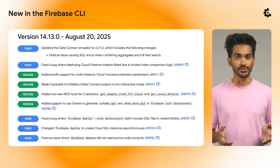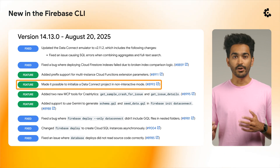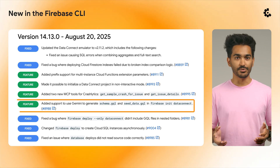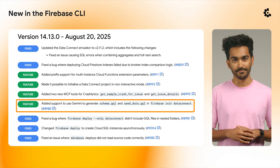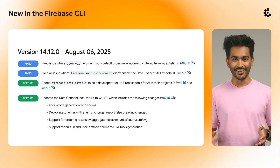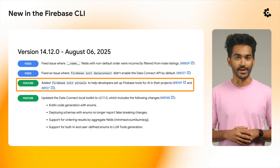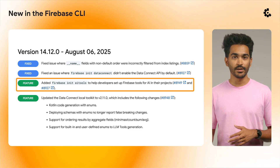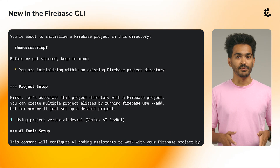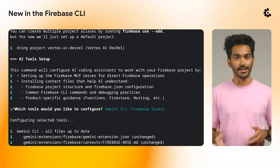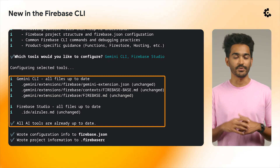That same version also introduces updates to how you can initialize Firebase Data Connect. There's now a non-interactive mode and a new option to use Gemini to auto-generate a schema and some seed data for your database. Starting in CLI version 14.12.0, there is a new Firebase init AI tools command, which you can use to configure AI coding assistance to work with your Firebase project. This command can help you set up the Firebase MCP server for direct Firebase operations and install context files that help AI understand more about Firebase.